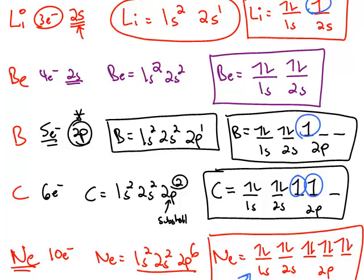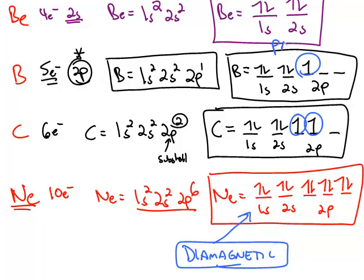If you have one unpaired electron, or two, or any number of unpaired electrons, that's called paramagnetic.